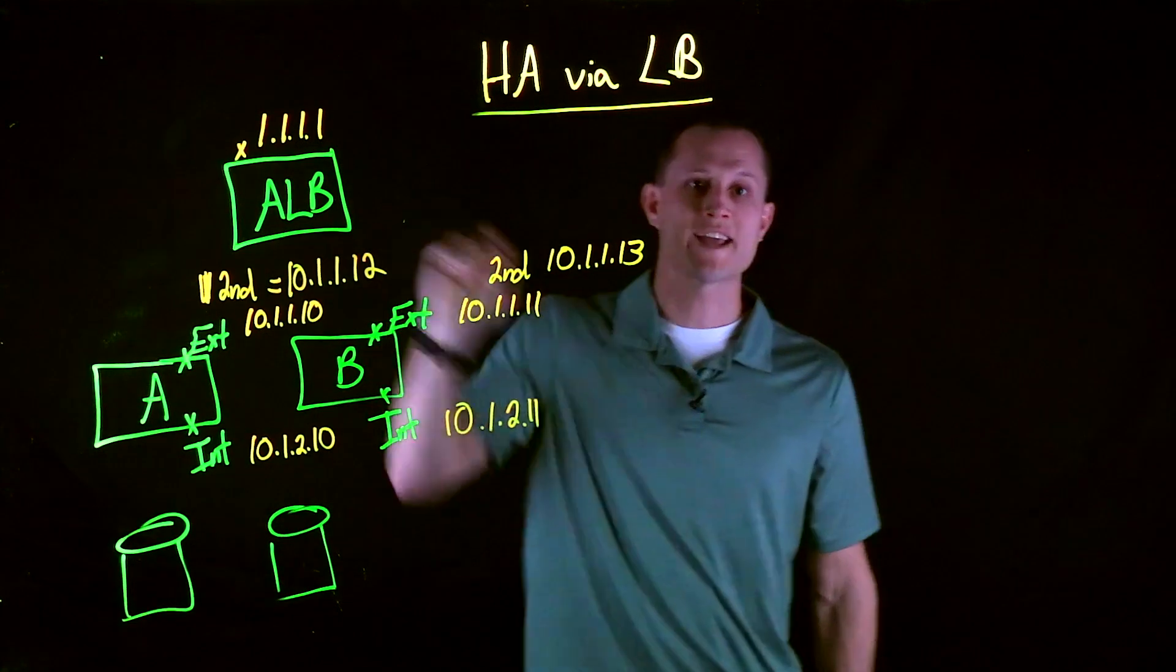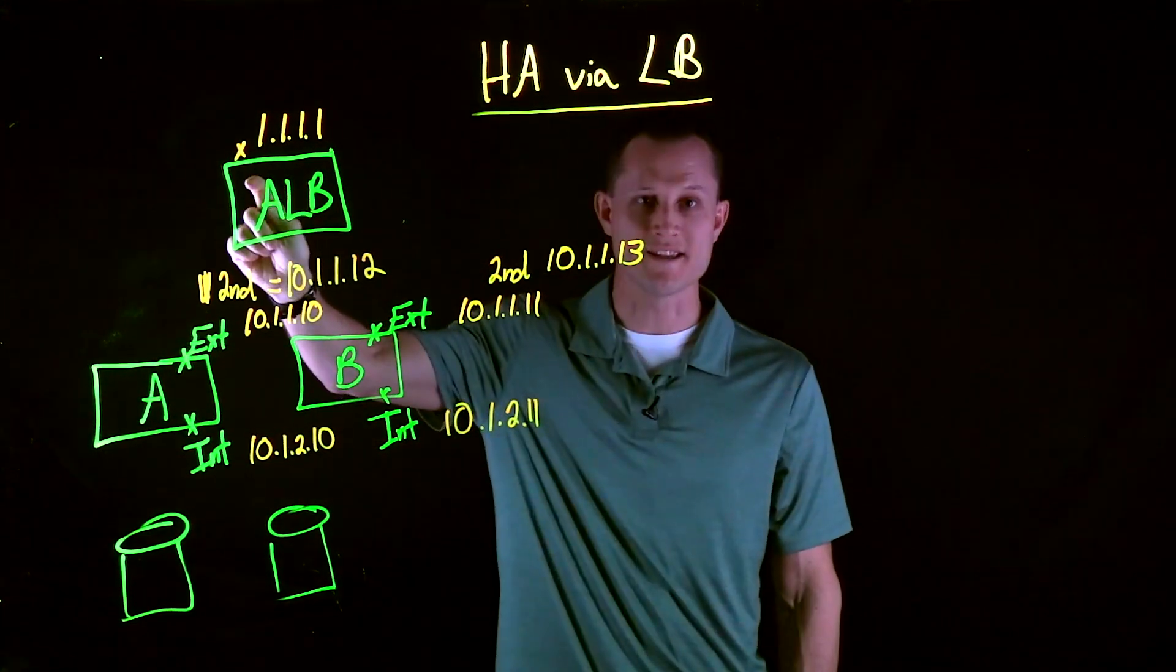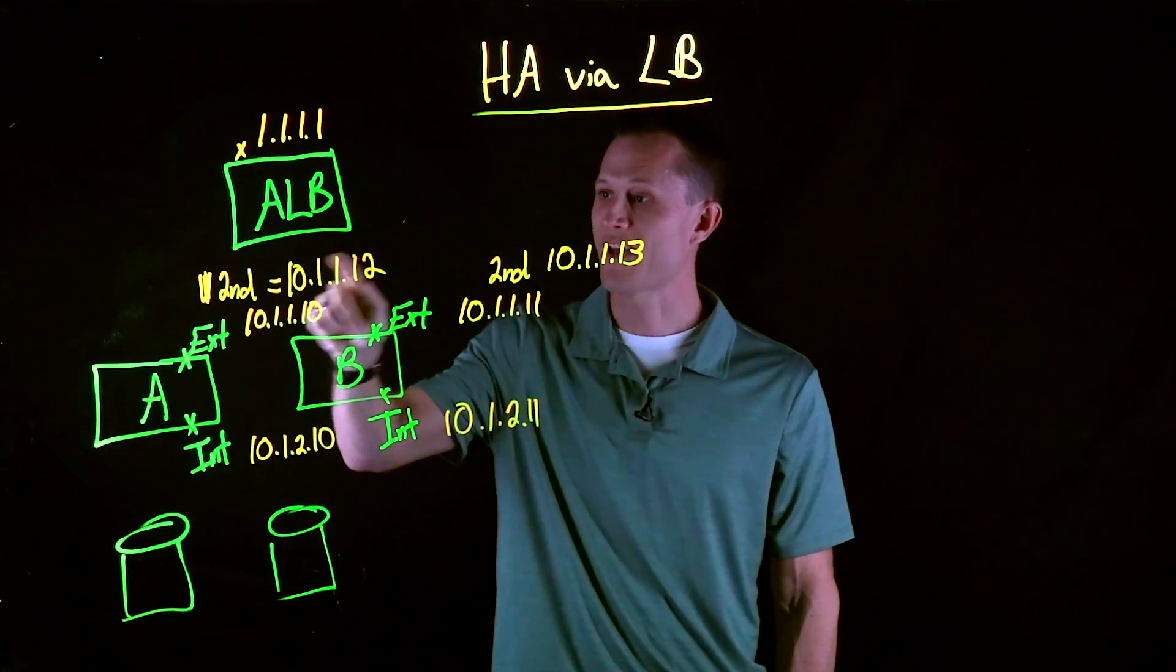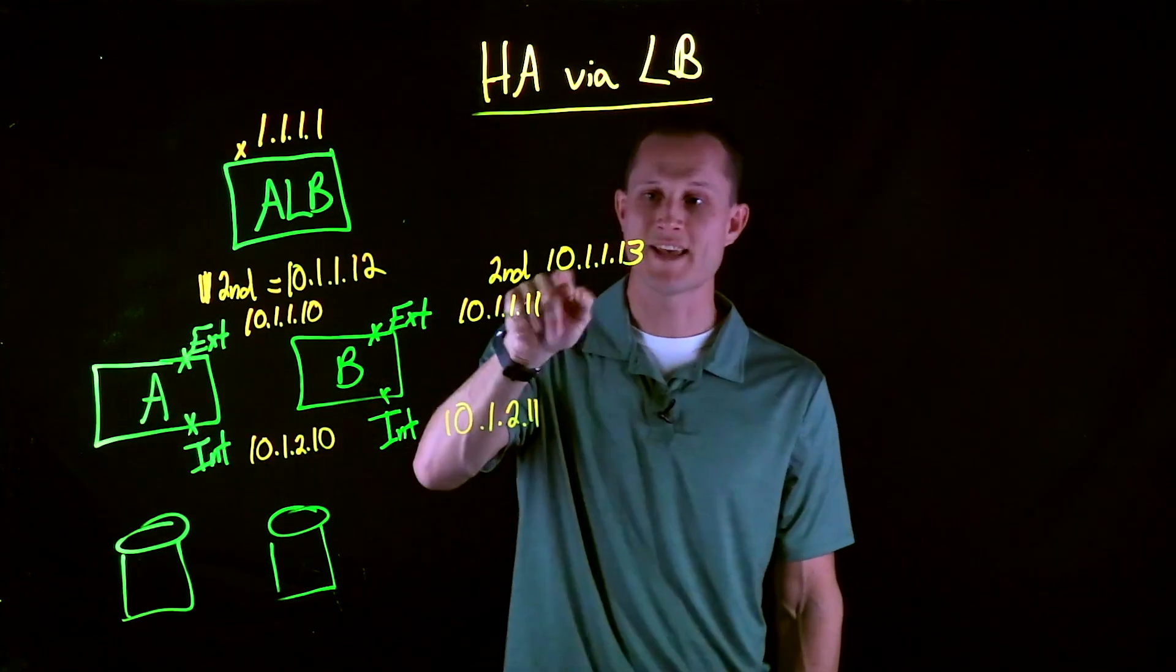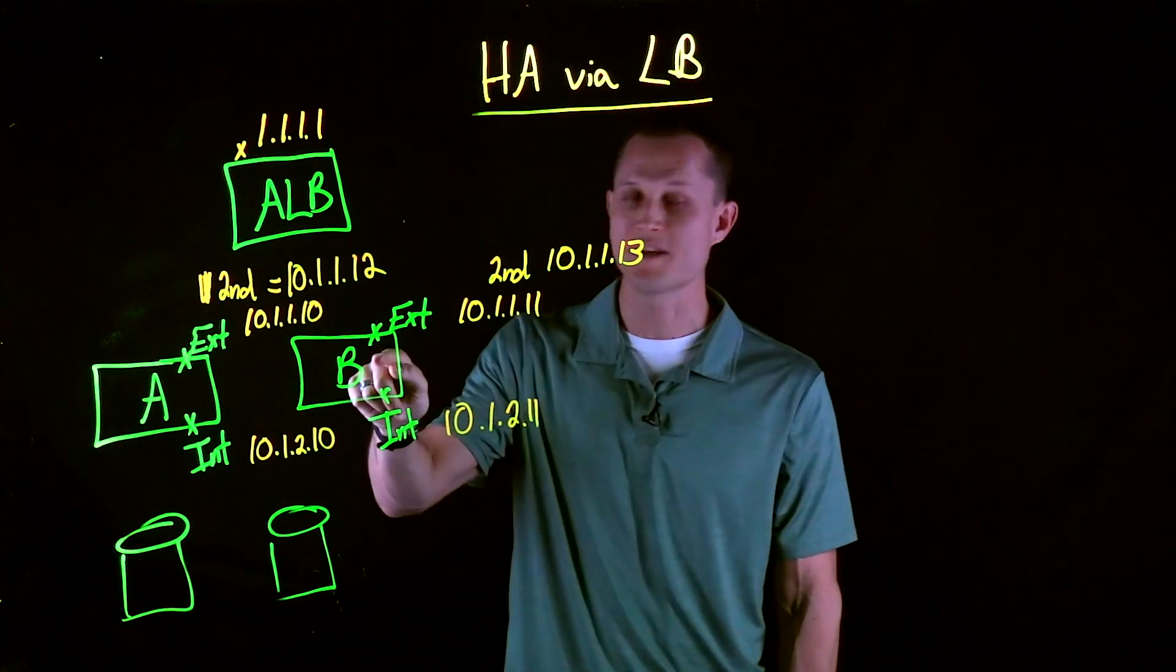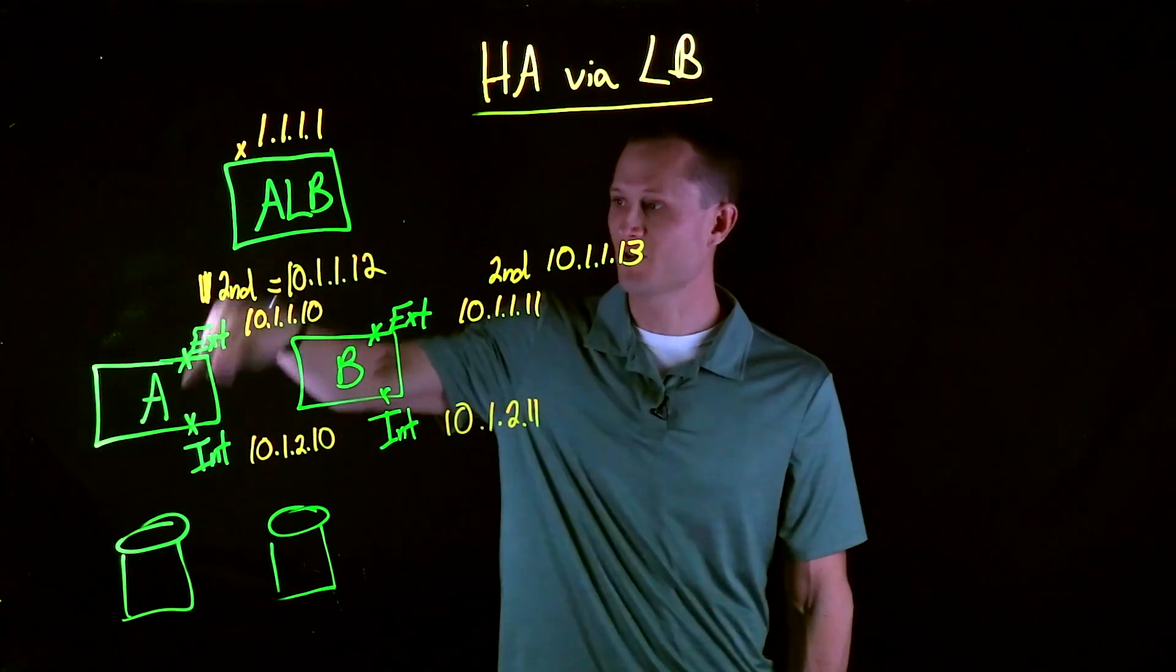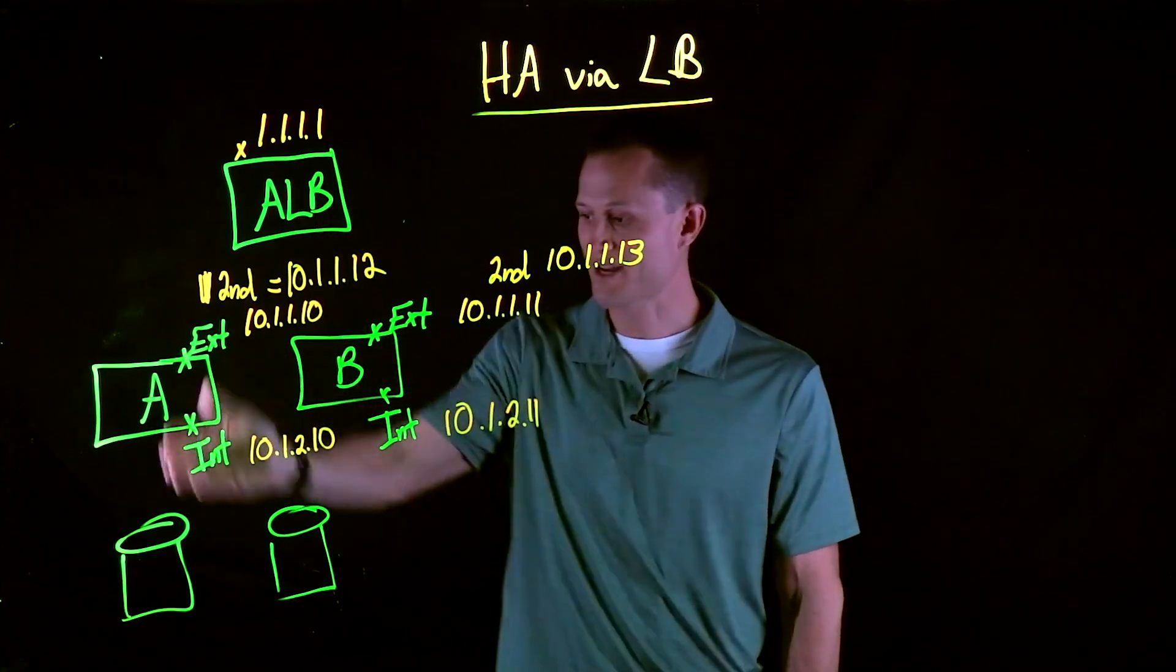Now keep in mind, we had the back-end pool concept. So the ALB is going to be talking to pool members using 10.1.1.12 to get to Big IP Unit A, and 10.1.1.13 to get to Big IP Unit B. This will produce equal load balancing between the pair, which will then send traffic to the back-end.